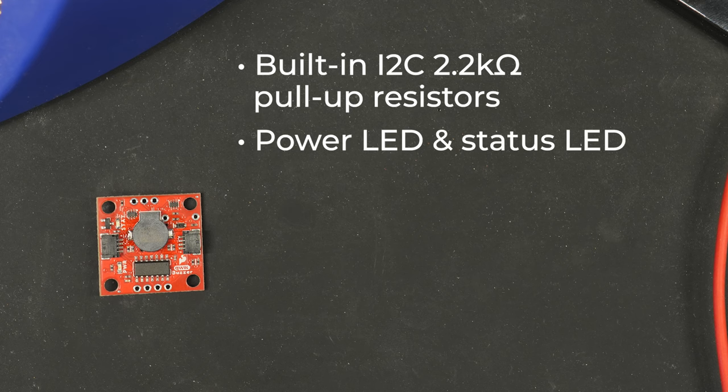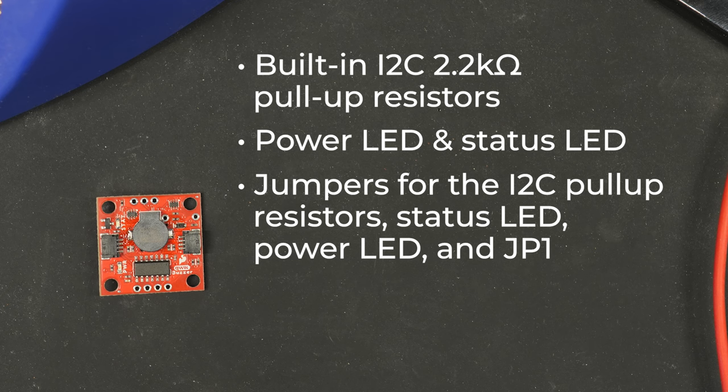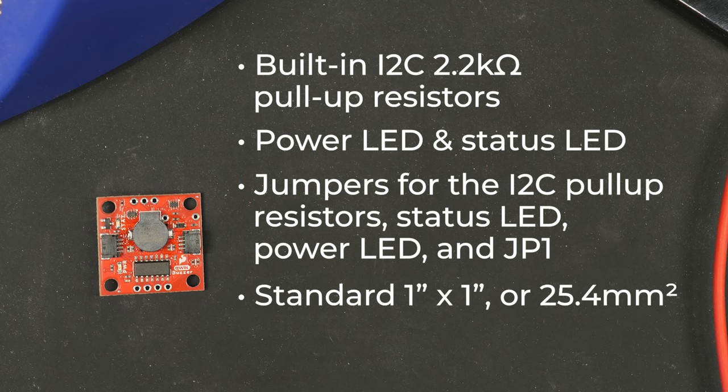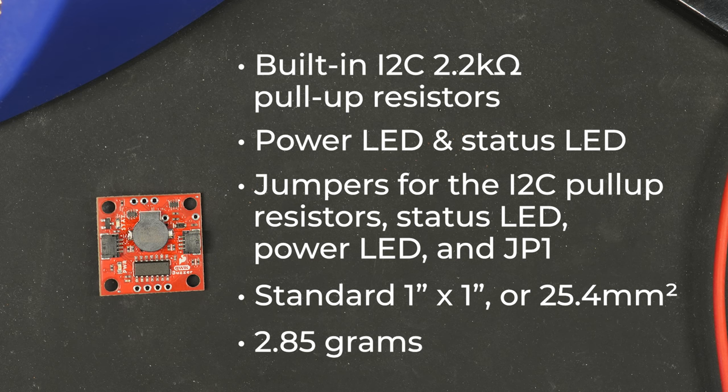two LEDs, one for power and one for status, and jumpers for the I2C pull-up resistors, status LED, power LED, and JP1. The board measures our standard 1 inch by 1 inch, or 25.4 millimeters squared, and weighs in at just 2.85 grams.